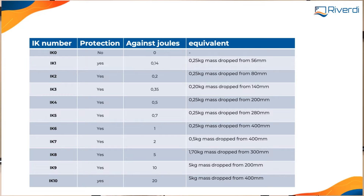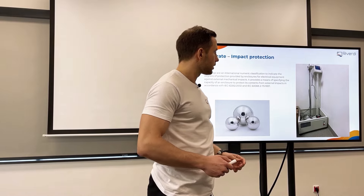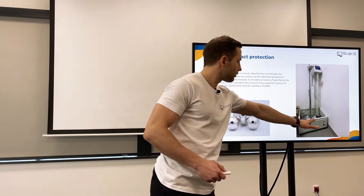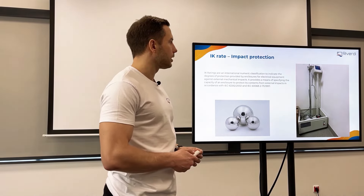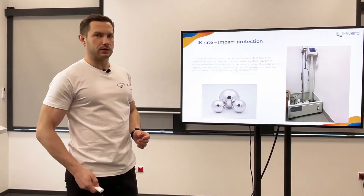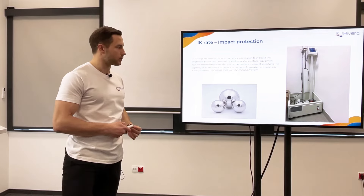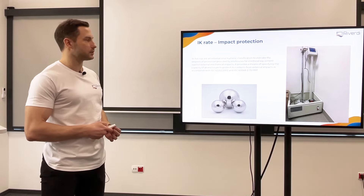So if we want to test IK9, for example, we need to take a five kilogram mass from 200 millimeter height, and we do it in a test like this. We put this mass here — there is an electromagnet — and we put our glass down there, and we just drop this and we see if it breaks or not.